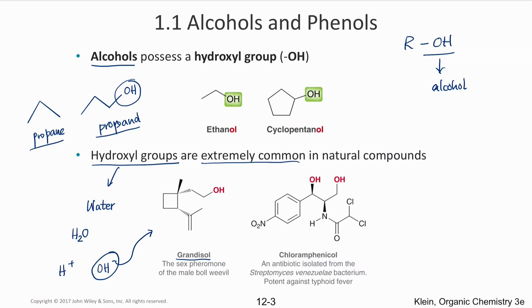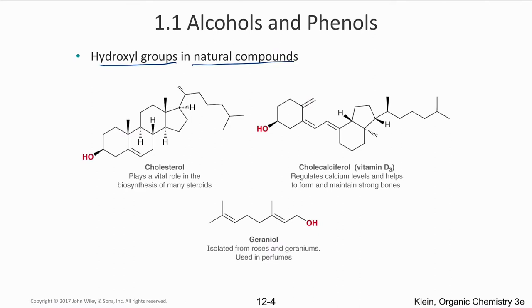Examples of natural alcohols include grandisol — the sex pheromone of the male boll weevil that causes the foul smell near cotton plantations — and chloramphenicol, an antibiotic isolated from Streptomyces venezuelae, which is one of the most potent drugs against typhoid fever. Cholesterol is a steroid containing an OH group essential for synthesizing many steroids including testosterone and estrogen.